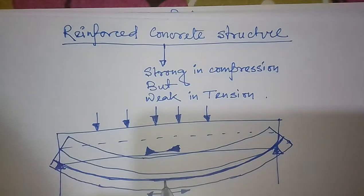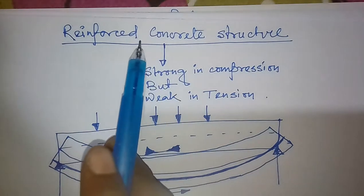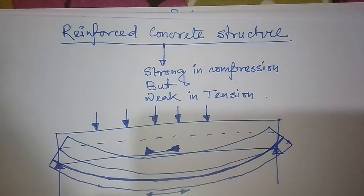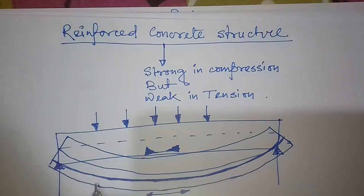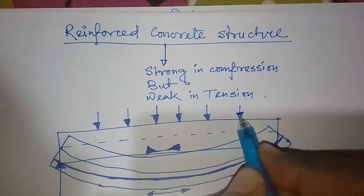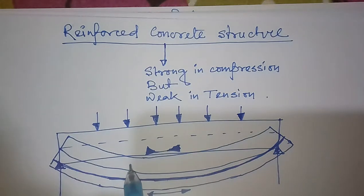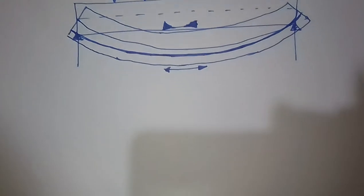This reinforcement is often in the form of steel, and this steel carries the tensile load at the bottom. Sometimes steel is also provided in the compressive zone to carry compression load, but mainly the reinforcement in a reinforced concrete structure is used to resist the tensile force. In the case of columns, reinforcement is also used to carry compressive load — but that is another topic. We use steel as a reinforcing material in concrete, and this composite structure is termed a reinforced concrete structure.